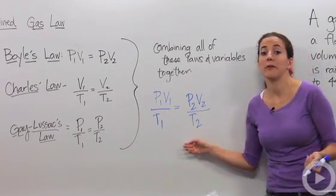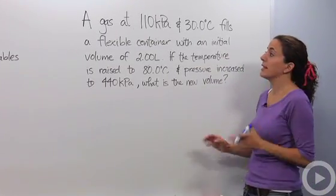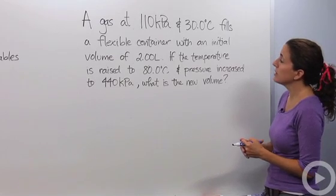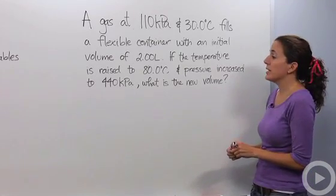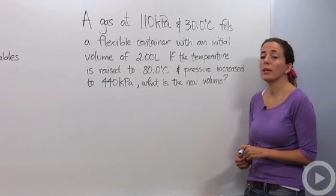So let's actually go over to an example and do one together. All right, so I have a problem up here that says a gas at 110 kilopascals and 30 degrees Celsius fills a flexible container with an initial volume of 2 liters. If the temperature is raised to 80 degrees Celsius and the pressure increased to 440 kilopascals, what is the new volume?